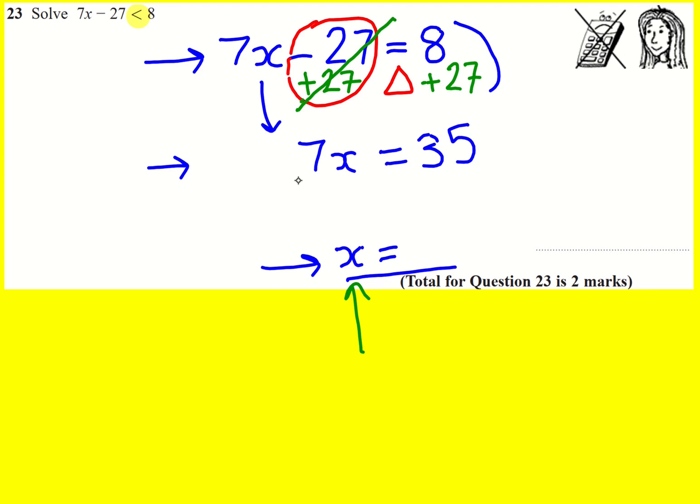Then, how do I get from 7x down to x on its own? Well, 7x means 7 multiplied by x, so I must undo that by dividing by 7. 35 divided by 7 is 5.